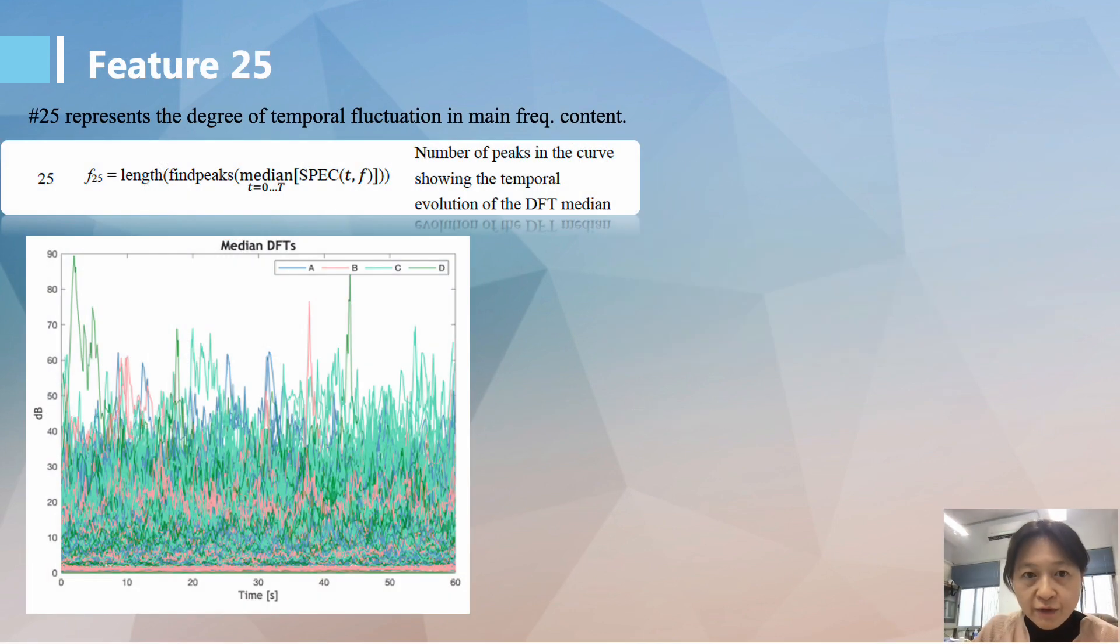Feature 25 represents the numbers of peaks in the temporal evolution of discrete Fourier transform median values.